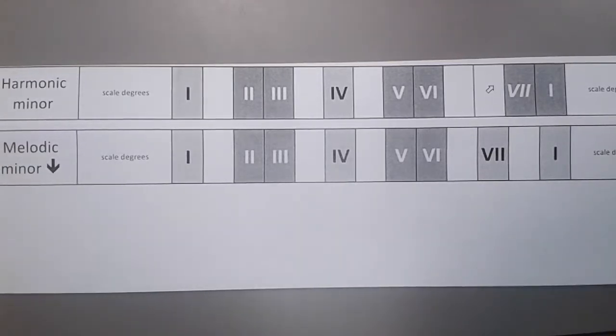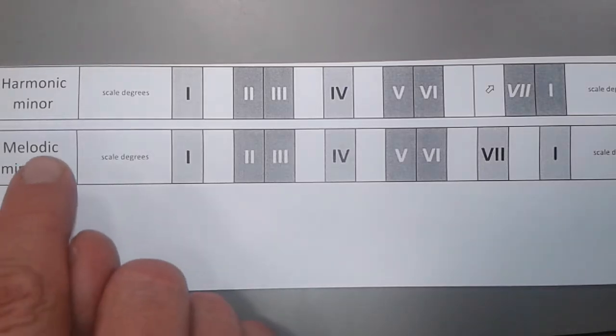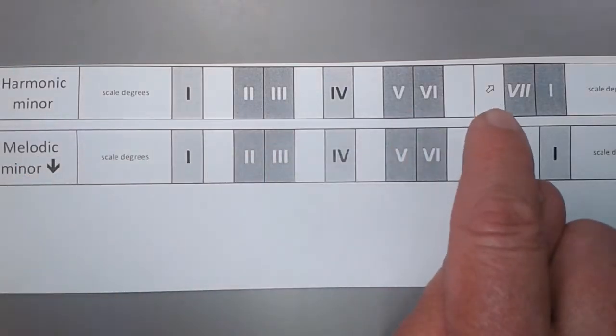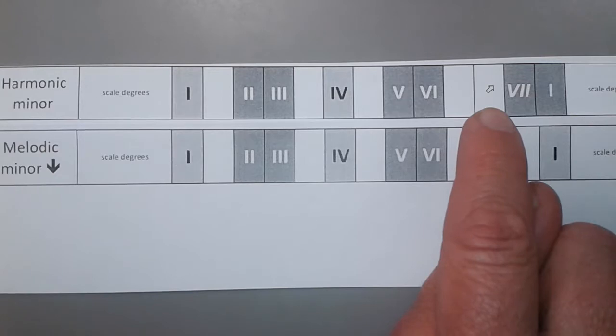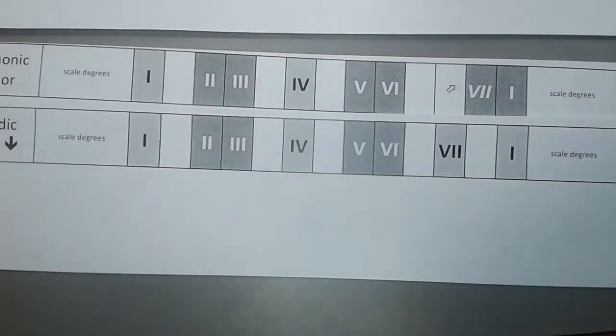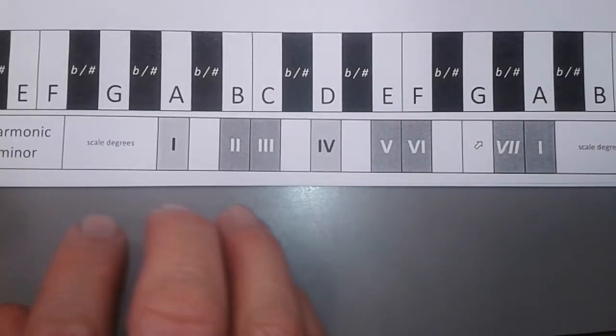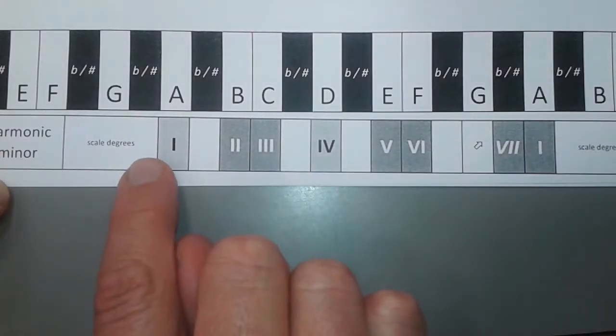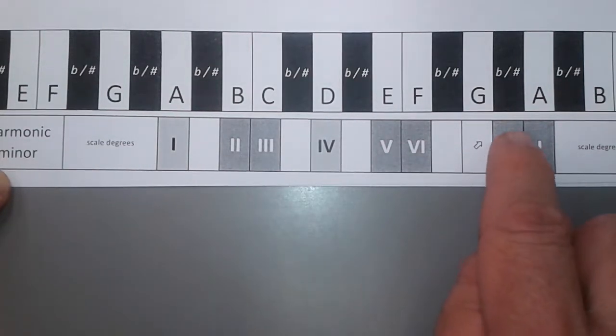The harmonic minor scale uses all the notes of the key signature, but changes another one, which is not shown in the key signature. So, for example, if we have A minor here, which has no sharps and flats in the key signature, there will be in the music here and there a G sharp as well.